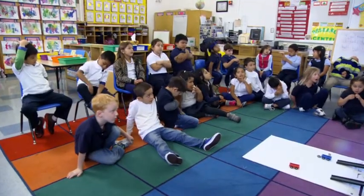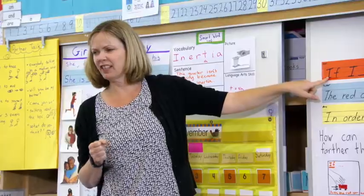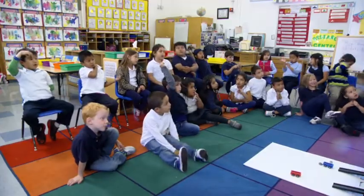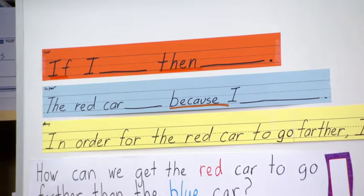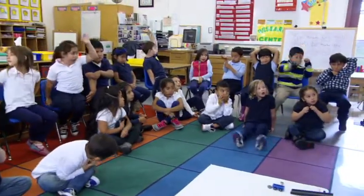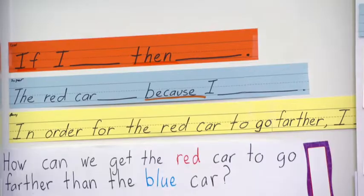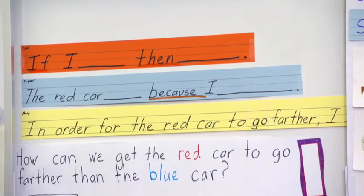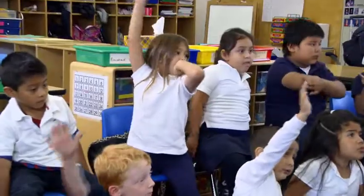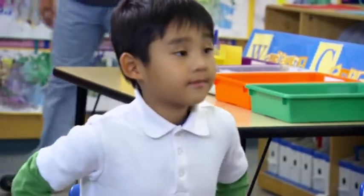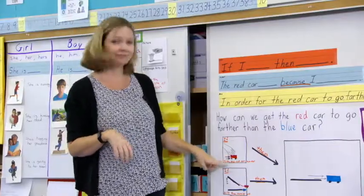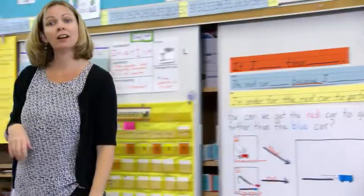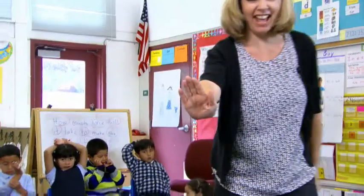Let's try our fancy sentences now. The first one is the cool sentence: if I something, then something. If I push the red car, then it will go farther. The teacher offered them three sentences — a cool sentence, a super sentence, or a fancy sentence. That gives kids choice about how much risk they want to take with language and where they want to enter into the complexity. Kevin, which one do you want to try? If I push the red car harder, then the red car will go farther than the blue car. Yes, nice job.